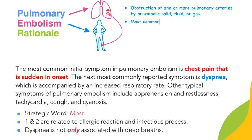The most common cause of pulmonary embolism is deep vein thrombosis. The most common initial symptom in pulmonary embolism is chest pain that is sudden in onset. This makes sense because if you have an obstruction of one of the arteries in the lungs, you're going to have tissue that becomes ischemic, starts dying, and that tissue is more than likely going to hurt.